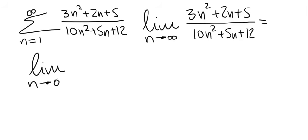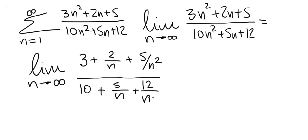This is limit n goes to infinity. 3n squared over n squared is 3. 2n over n squared is 2 over n plus 5 over n squared. And in the denominator, we have 10 plus 5 over n plus 12 over n squared.